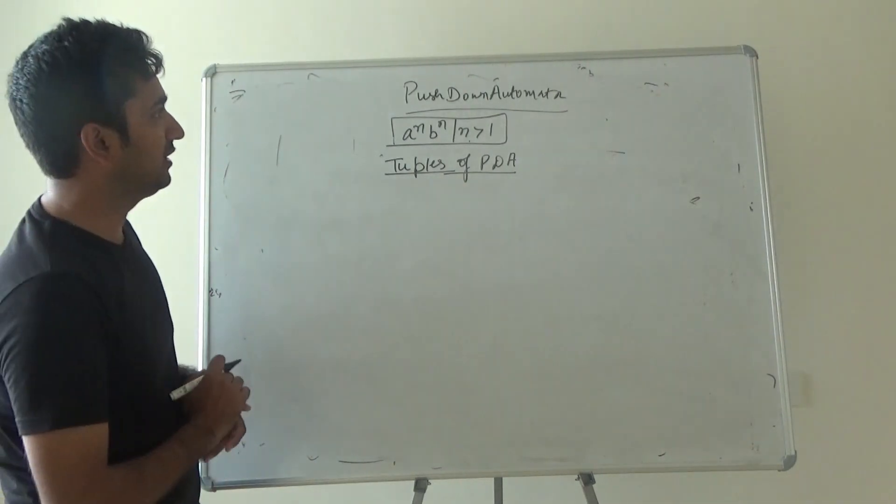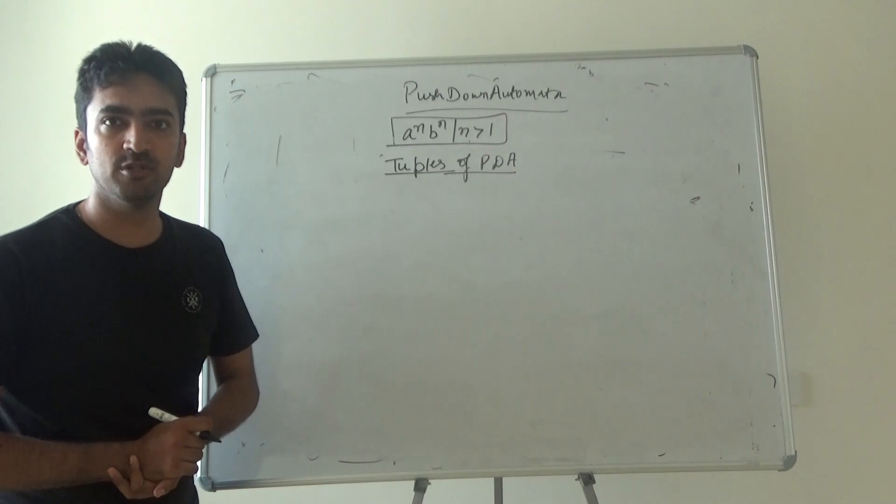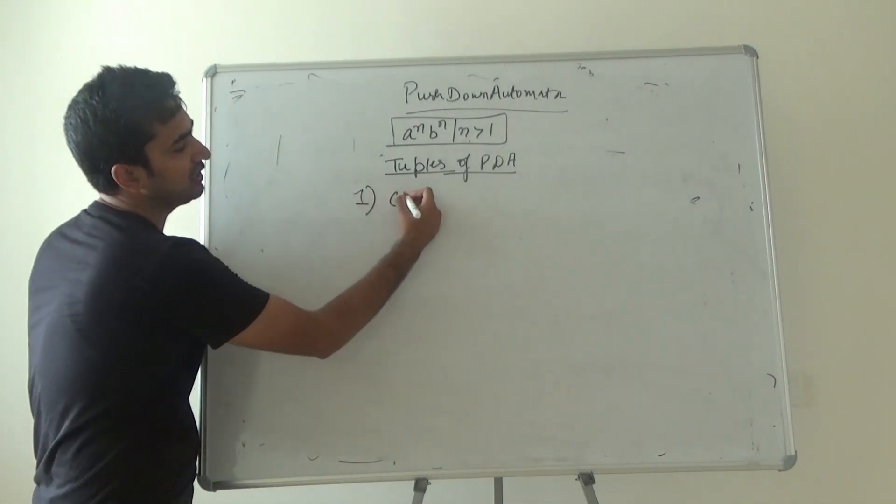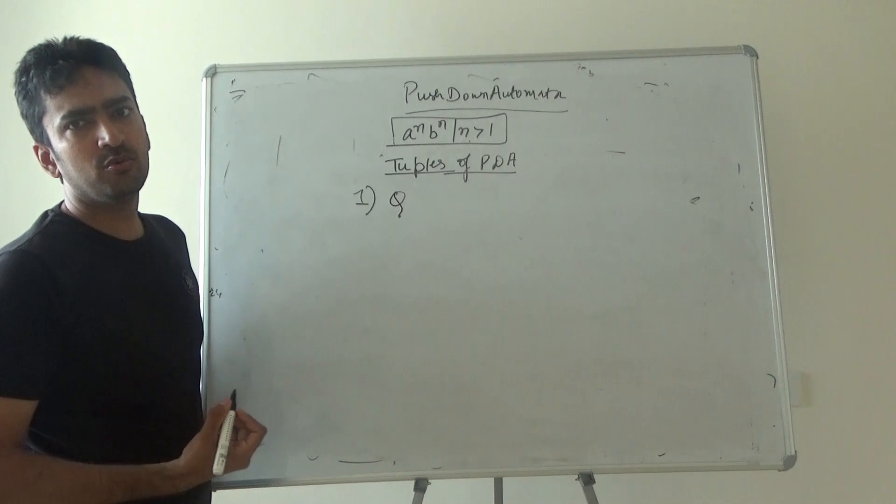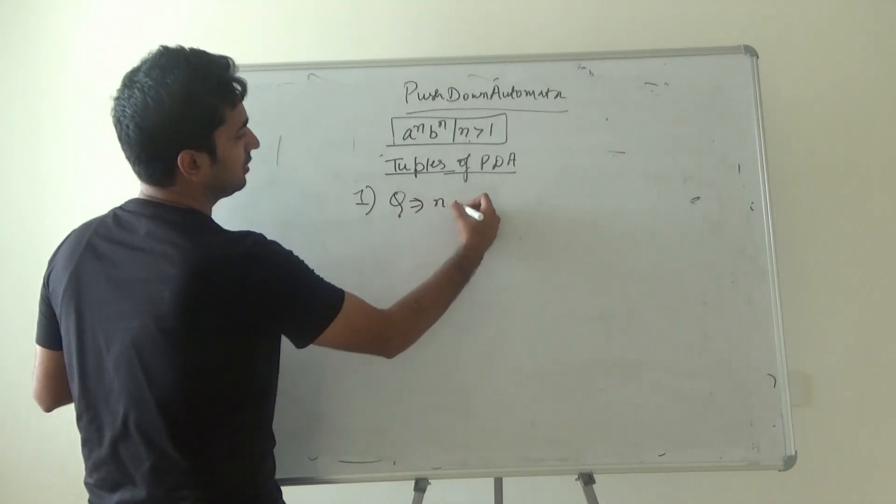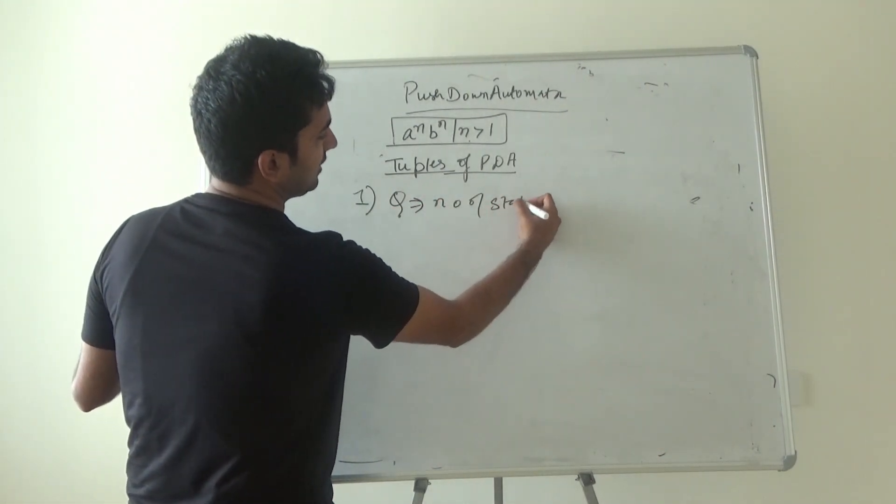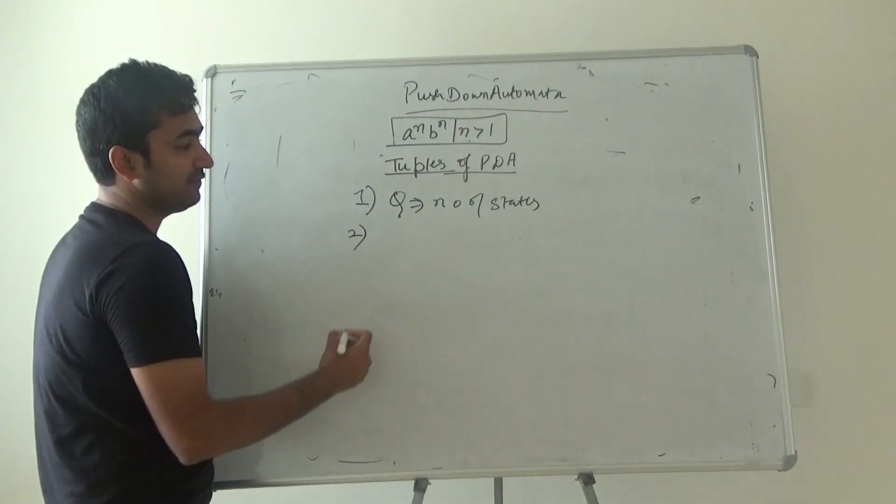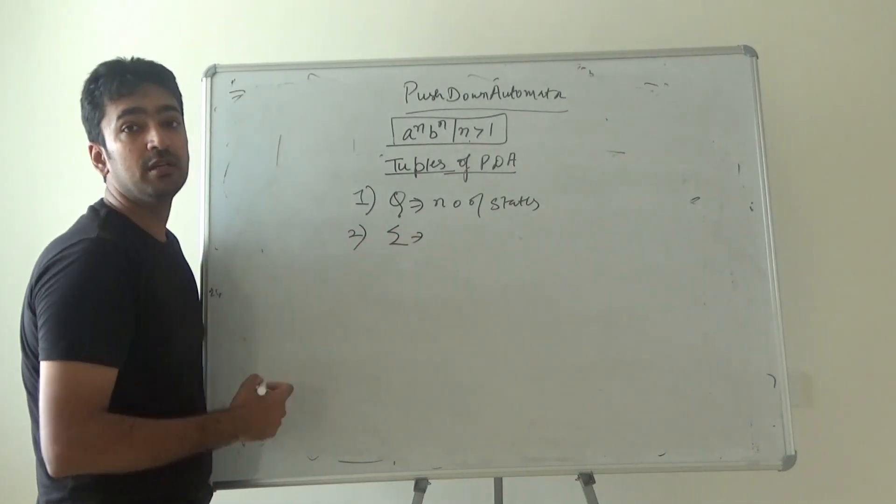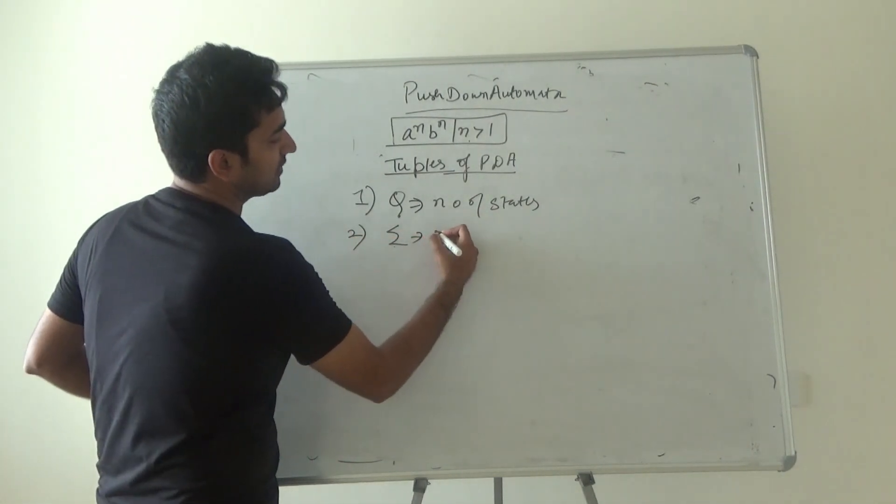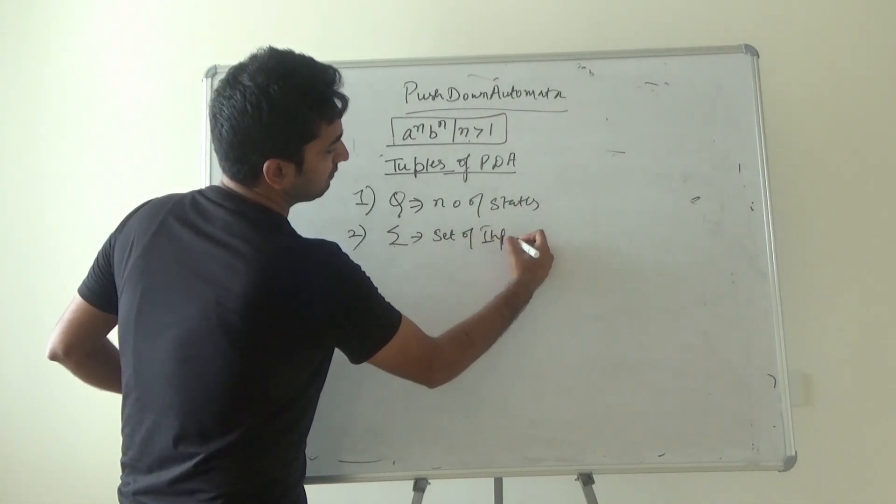We need to understand some tuples of push down automata. The first symbol as we all know is capital Q. Capital Q represents the number of states. Then we have got sigma symbol. This symbol is known as set of input symbols.